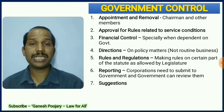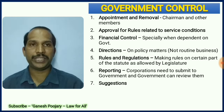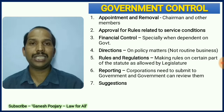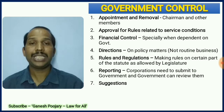The third way of control is government control over public corporations. First, the appointment and removal of the chairman and other important persons is done by the government, giving them control. Second, the approval of rules related to service conditions is framed by the government. Third, financial control is available with the government because most of the time the budget is provided by the government itself. Fourth, the government gives directions on policy-making aspects.